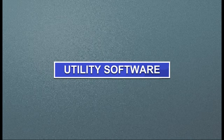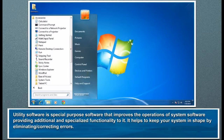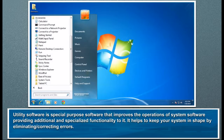Utility software is special purpose software that improves the operations of system software, providing additional and specialized functionality to it. It helps to keep your system in shape by eliminating or correcting errors.